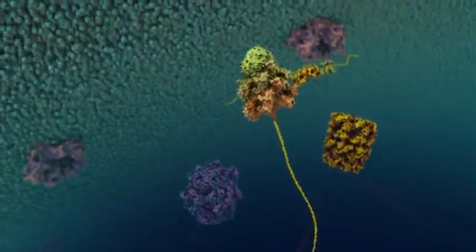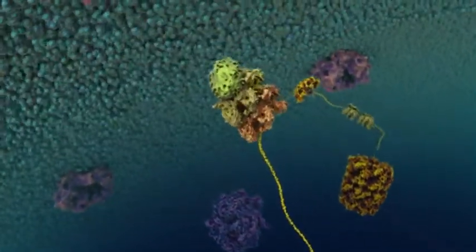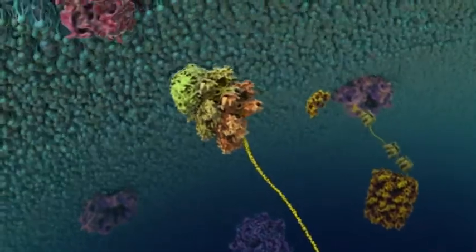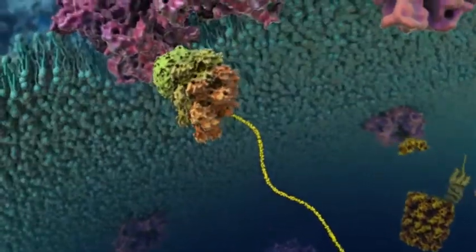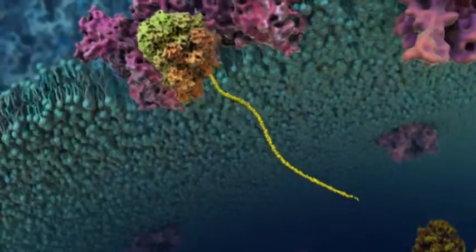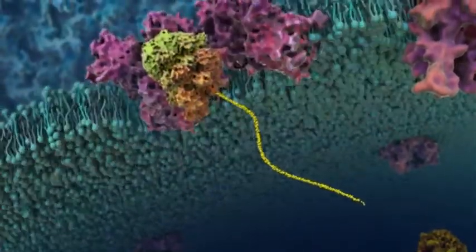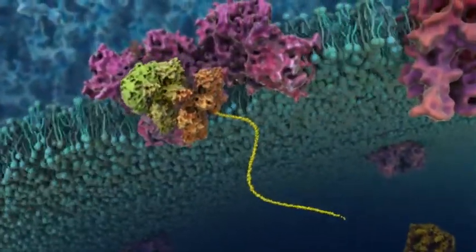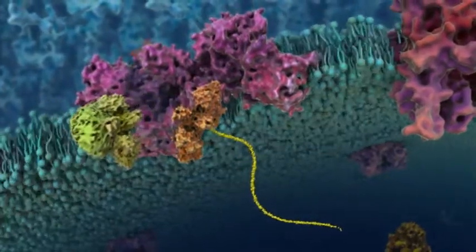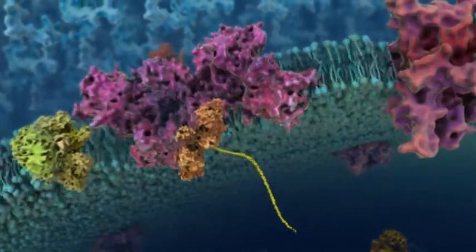The N-terminal peptide signal sequence of the recombinant protein targets the protein for secretion through one of two secretory pathways: the secretory or sec pathway, or the twin arginine translocase or tat pathway.